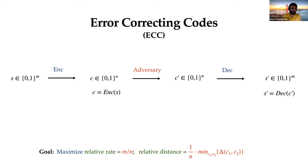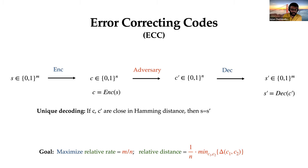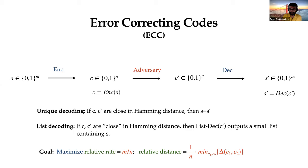The relative rate is the ratio of m over n, with less redundancy. The relative distance of the code is the minimum over all pairwise Hamming distances of codewords normalized by block length n, which is related to how well we can tolerate errors. If C and C prime are close, we want to recover back S. This is unique decoding where the number of flipped bits is less than half the minimum distance. A more relaxed notion is list decoding, where you need just a list of messages containing the original message. These have been heavily studied for decades.